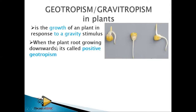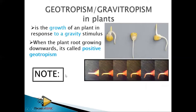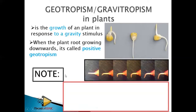When a plant root grows downwards, it is called positive geotropism — it is positively geotropic, meaning it is growing towards gravity. You can see that the roots end up growing downwards.